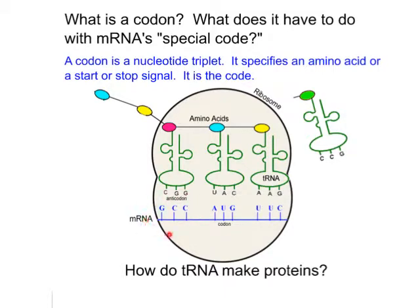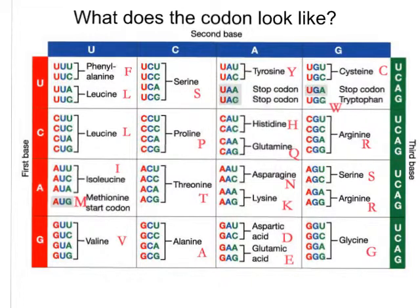For example, the codon GCC codes for the amino acid alanine, and the codon AUG codes for methionine — which is actually the start codon. The tRNA molecules have an anticodon that pairs up with the mRNA codon, and these are very specific, giving us just the right amino acid. The amino acids carried by the tRNA are joined to the growing chain by peptide bonds, and that is how the protein gets formed.